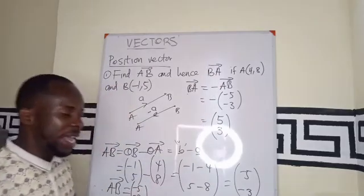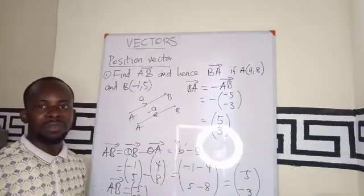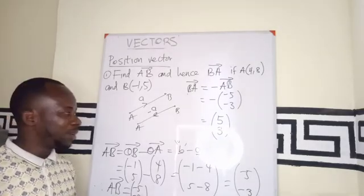So, therefore, the vector BA is (5, 3). Alright, thank you very much.